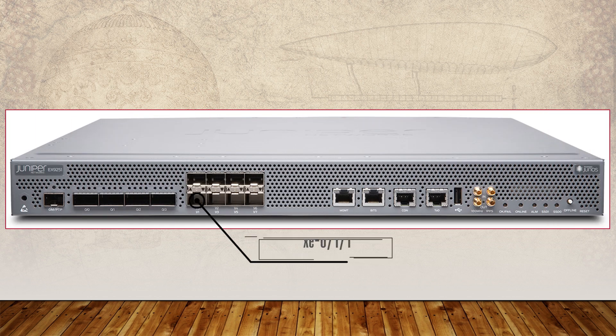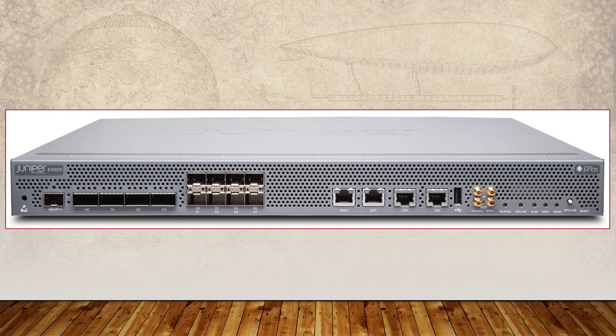Interface names get a little tricky when SFPs are involved. SFPs can have different speeds, so one may be 10G while another may be 1G. On a switch, an interface could begin with GE if it's a 1G SFP, or XE if it's a 10G SFP. However, on some routers, SFPs will always use XE. Does that sound confusing? It is. Thanks, Juniper. In this example, we have a 10G SFP in FPC 0, module 1, port 1 — therefore the name is XE-0/1/1.